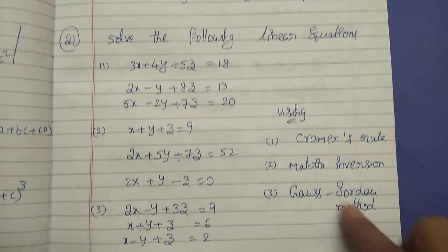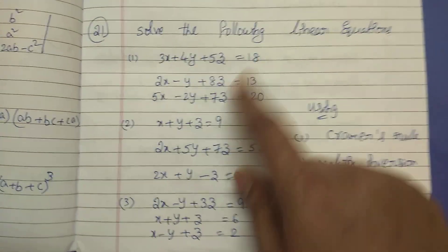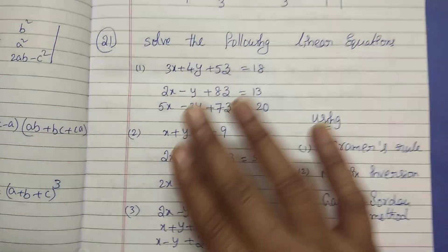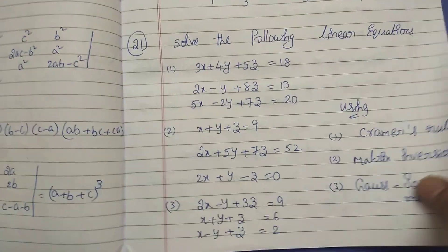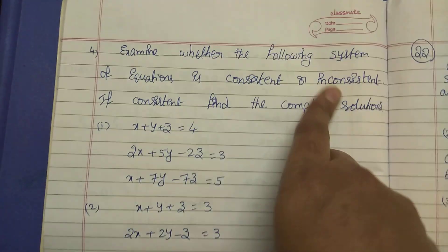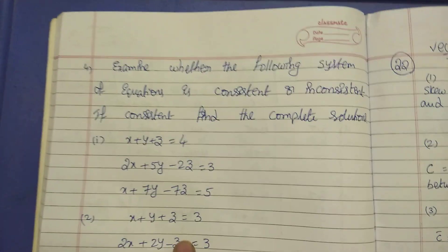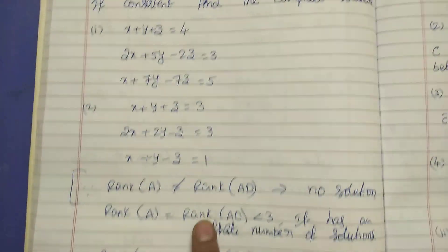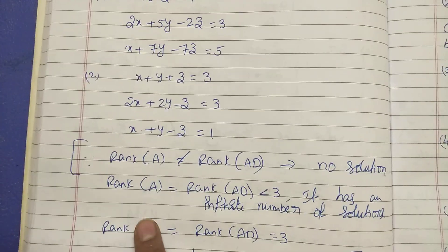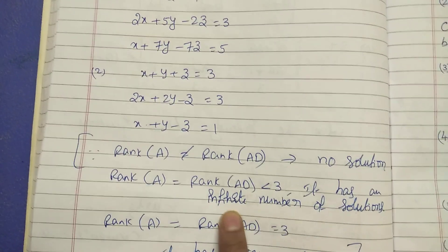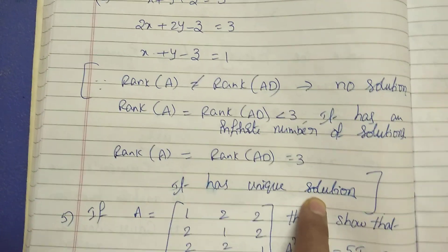If you have 3 rows it will be easy. If you have 2 rows and 5 rows it will be easy. Every bit is consistent. Models 3 and 2 are consistent. Consistent is not equal to rank of AD — no solution. Rank of A equals rank of AD less than 3 — infinite number of solutions. Rank of A equals rank of AD equals 3 — unique solution. The answer equals X, Y, Z values.